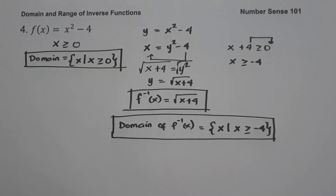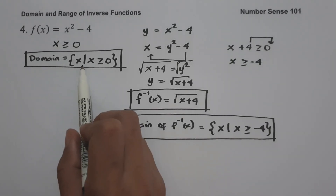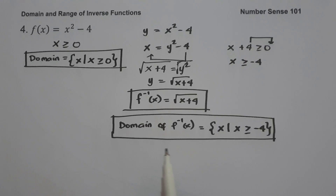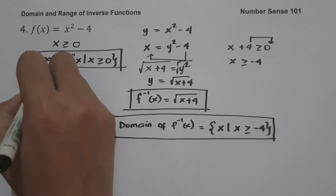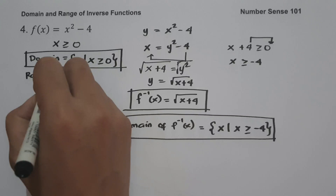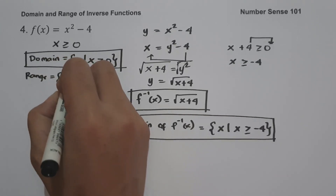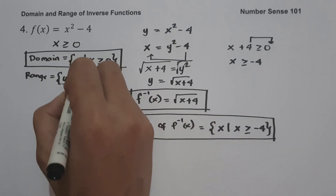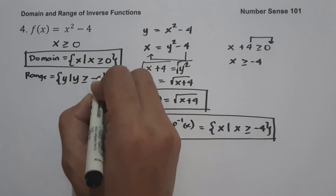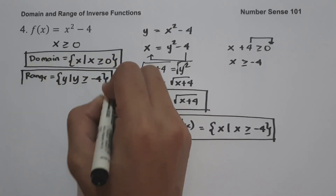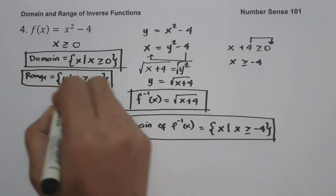To find the range of the given function, since the range of the original function is the domain of the inverse function, the range is the set of y values such that y is greater than or equal to negative 4. This will be the range of the original function.